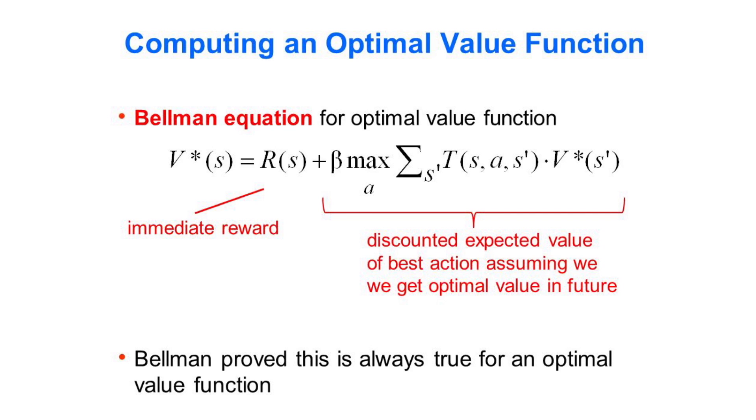Value function algorithms in reinforcement learning generally follow the current policy as defined by the current value function, and whenever a reward is received, the agent propagates it back through its history, assigning each action some of the reward. Over time, this gives the agent a good idea of what states and actions result in good rewards.